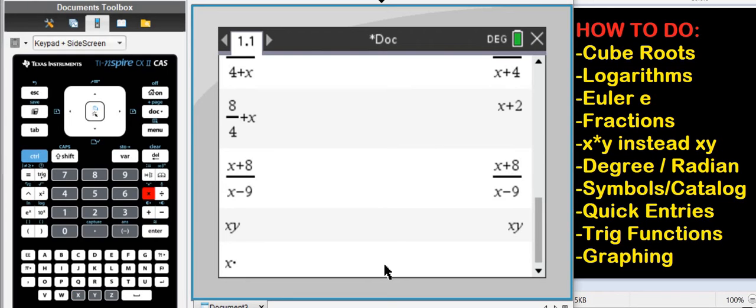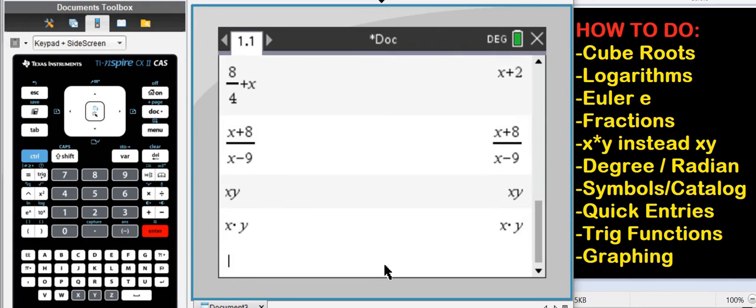Instead, you must write x times y and then press enter. You notice the difference? The time symbol in between. So now you can evaluate this term.